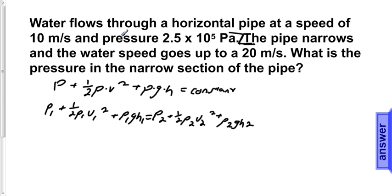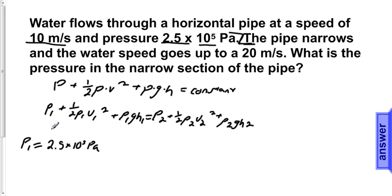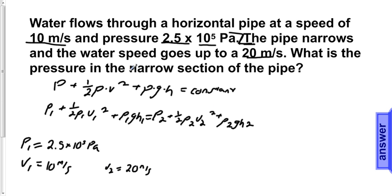Reading the problem, we can see that the pressure of the first section of the pipe is 2.5 times 10 to the 5th pascals, so P1 equals 2.5 times 10 to the 5th pascals. The velocity in the first section is 10 meters per second, so V1 equals 10 meters per second. The water speed in the narrow section goes up to 20 meters per second, so V2 equals 20 meters per second. We need to solve for P2, the pressure in the narrow section.